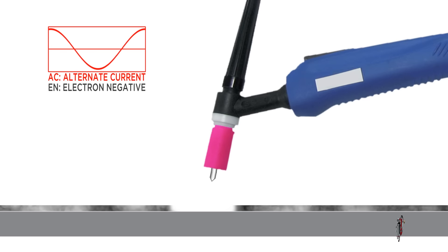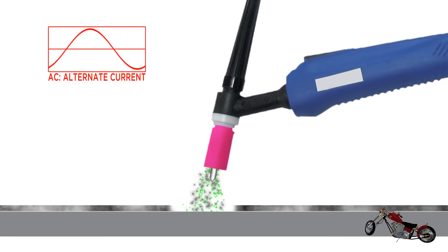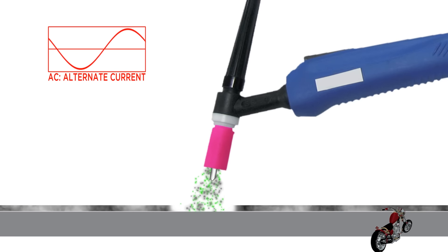During the second cycle, called EN or Electronegative, where the current flows from the electrode to the work, the arc produces enough heat to melt the clean aluminum and fuse the joint. The two cycles combine the cleaning stage to the welding one.